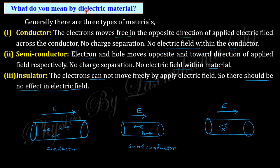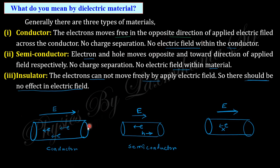First we need to know about dielectric material. Materials are mainly classified into three types: conductor, semiconductor, and insulator. In a conductor there is a huge number of free electrons. When you apply an external electric field, the electrons move in the opposite direction of the electric field. There is no charge separation, so no electric field is generated within the conductor — the electric field within the conductor is zero.